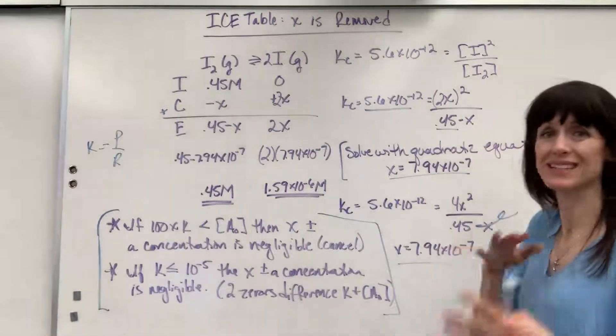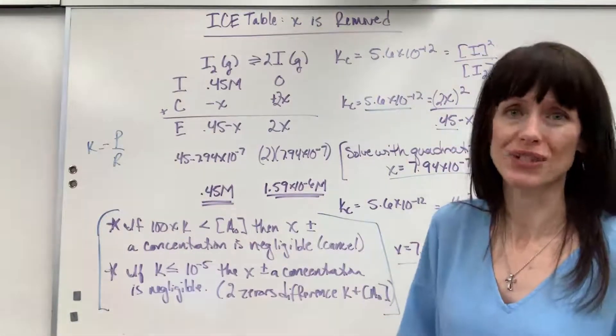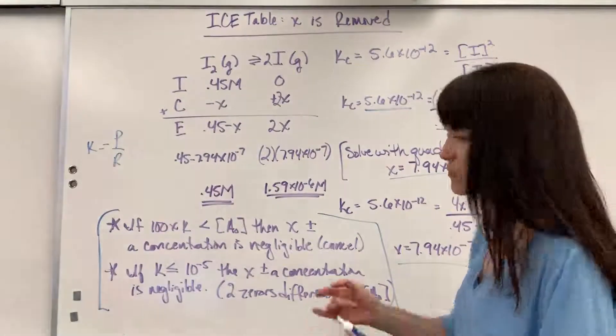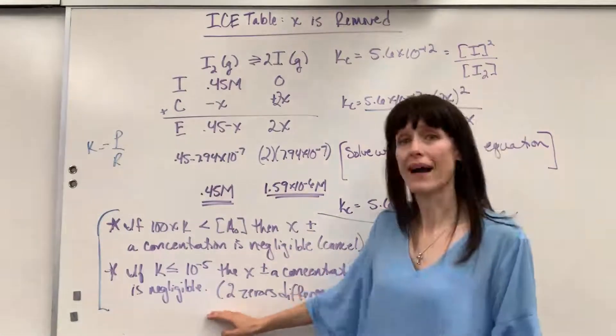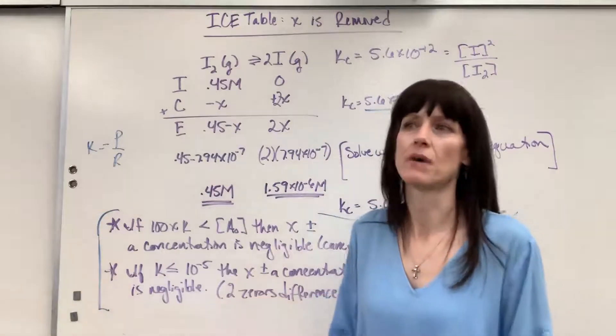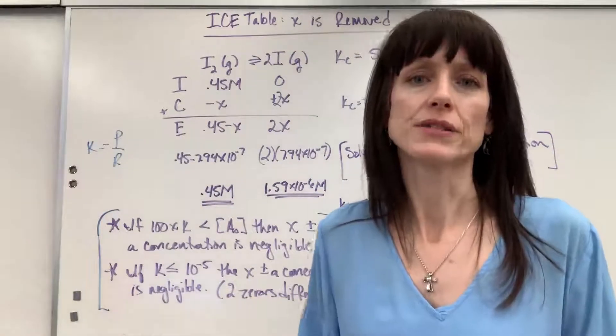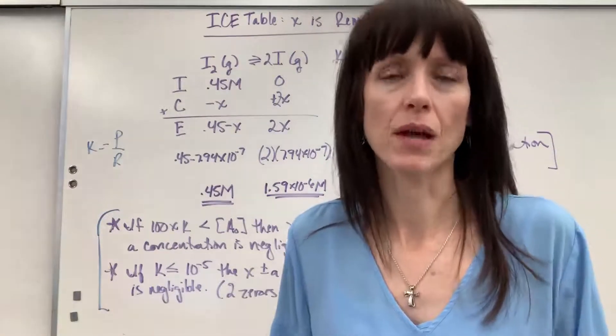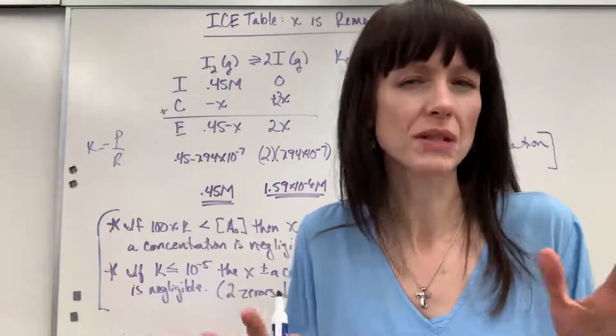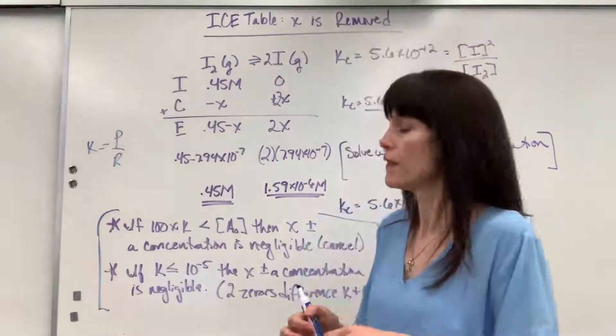This is negligible because in comparison to the original concentration, when I subtract that small x, it doesn't change that original concentration for all intent and purpose. Okay, so this is what I tell my students. Really, the smallest molarities that we'll get are to 10 to the minus 3. Okay, 0.001 molar. That's really probably the smallest molarity that we're going to see.